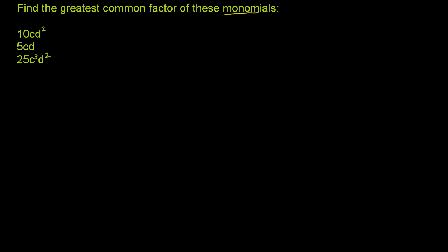Let's do this first one: 10cd squared. What is that equal to? Well, 10 is equal to 2 times 5. You could do a factoring tree here, but these are pretty straightforward numbers to factor into their prime factors. So 10 is 2 times 5. c — all you can do is write that as a c; you can't really simplify that anymore. And d squared can be written as d times d. So I've essentially broken 10cd squared into the product of the smallest constituents: the prime factors of 10, then c, then d.